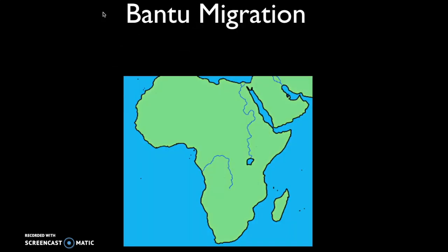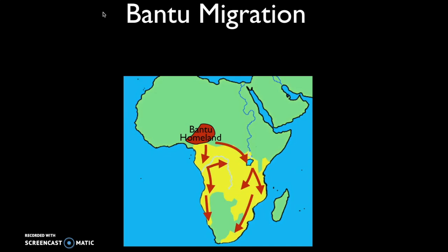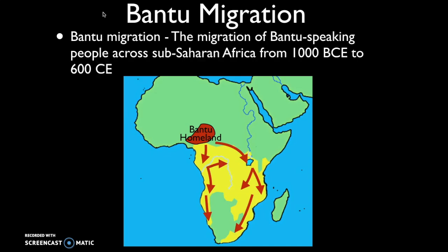Let's start with the Bantu migration. The Bantu migration was a migration of peoples from their homeland, the modern-day region of Nigeria, down across sub-Saharan Africa. It's the spread of these Bantu-speaking people from approximately 1,000 BCE to 600 CE. Most of this migration was taking place in Period 1, the Foundations period, and Period 2, the Classical Age.